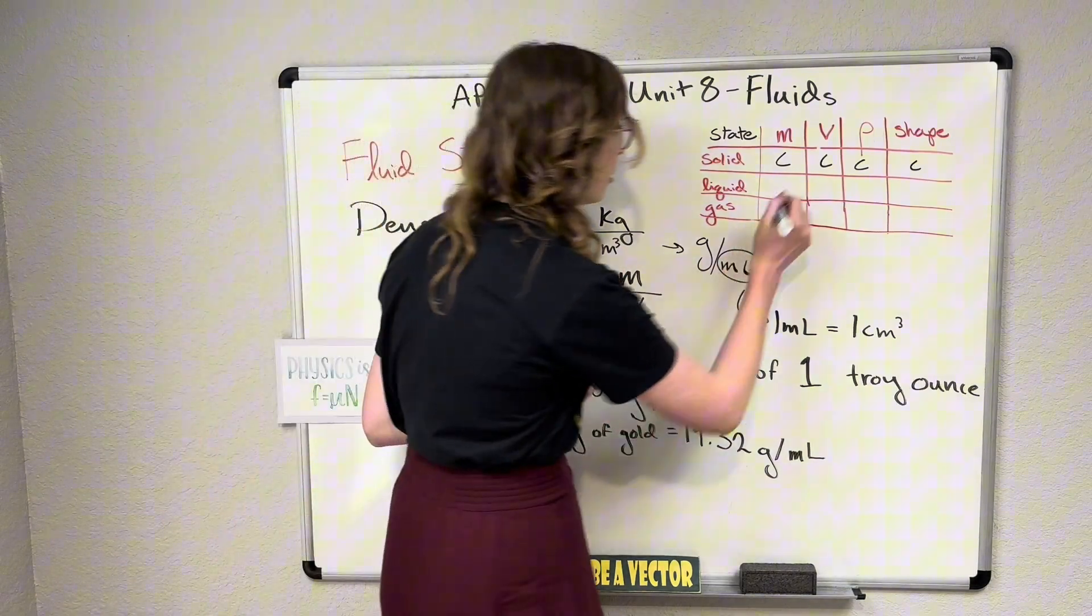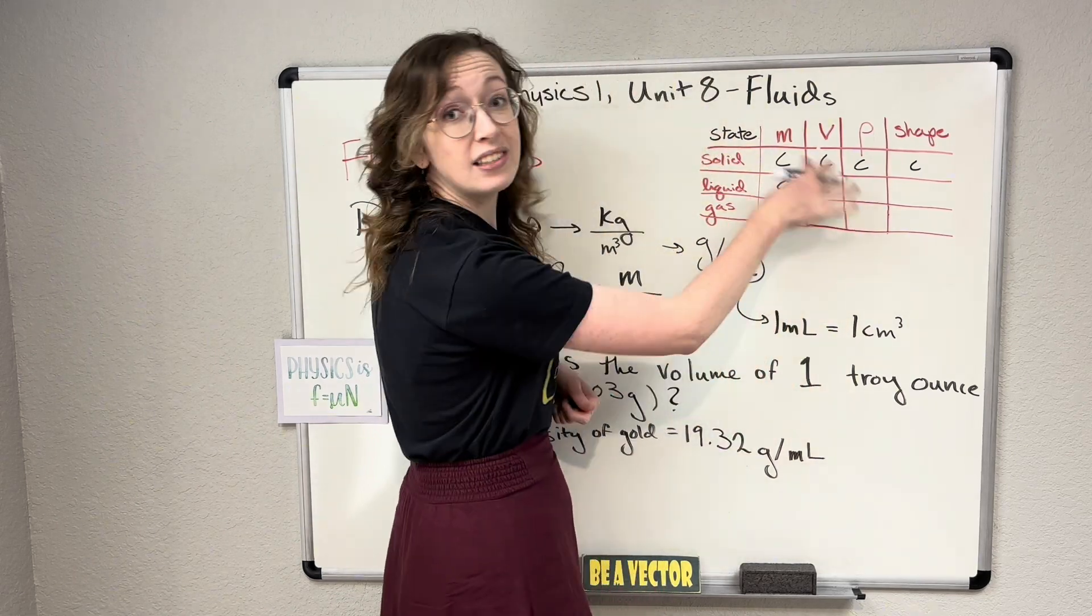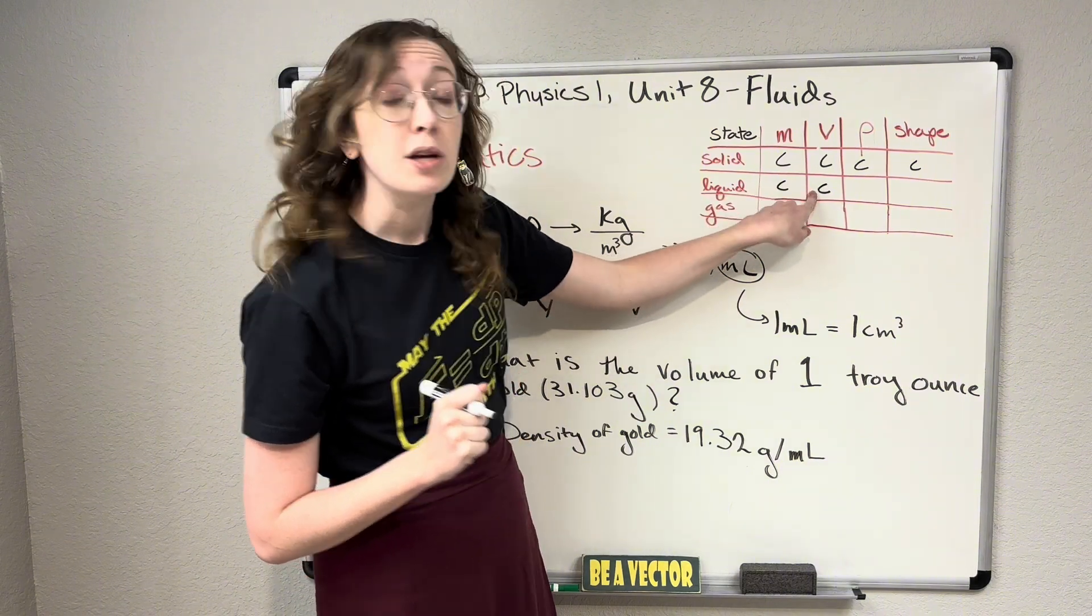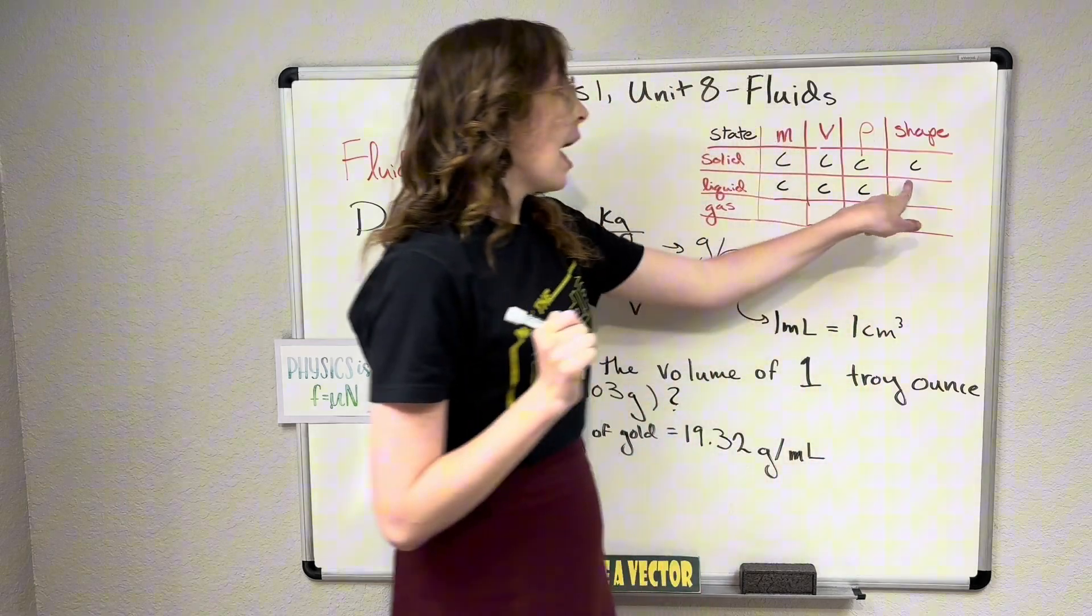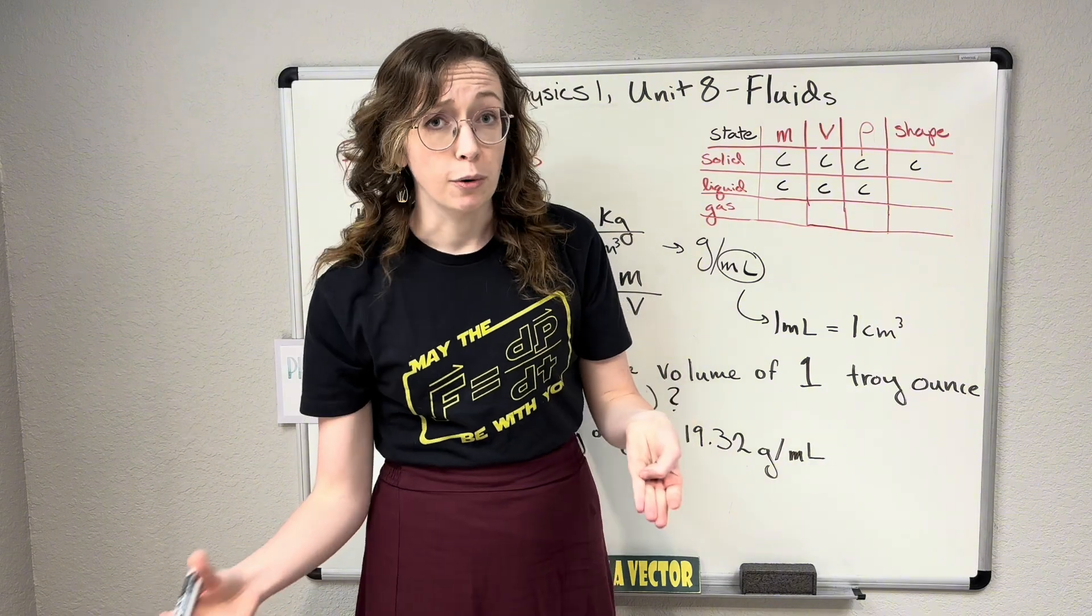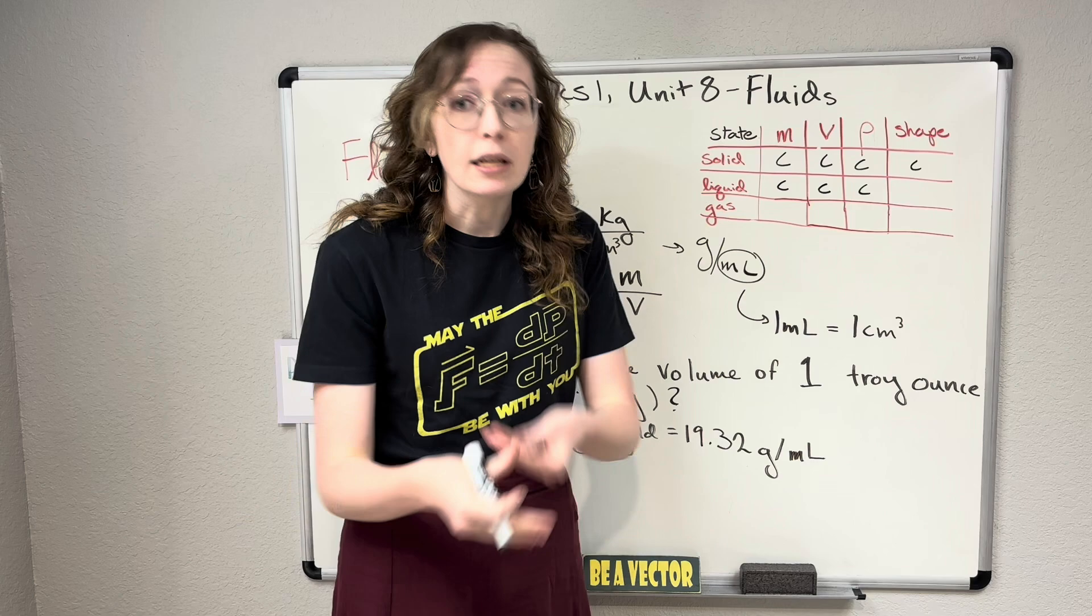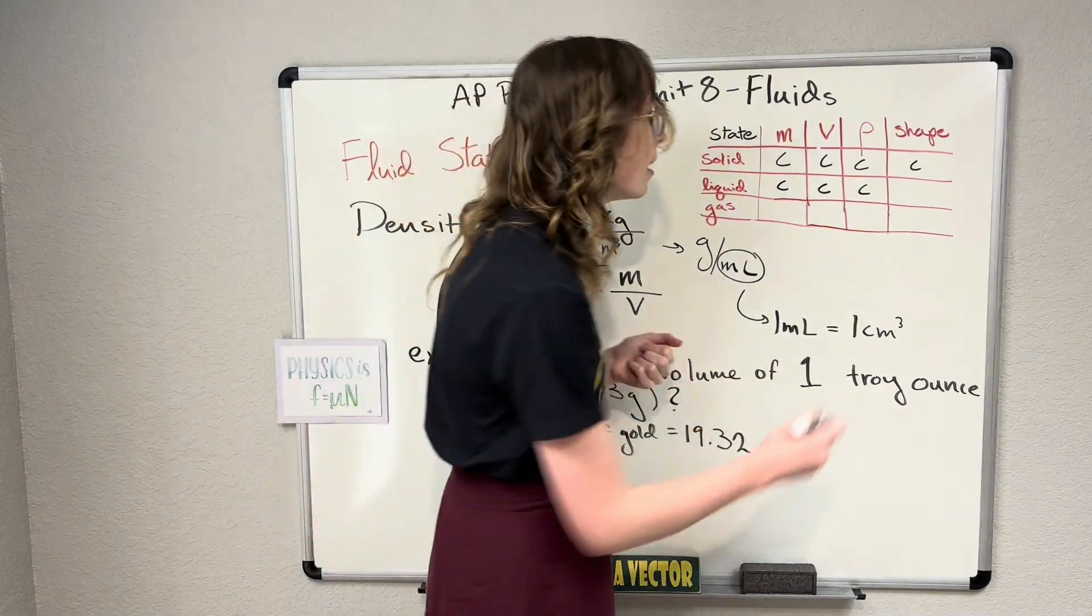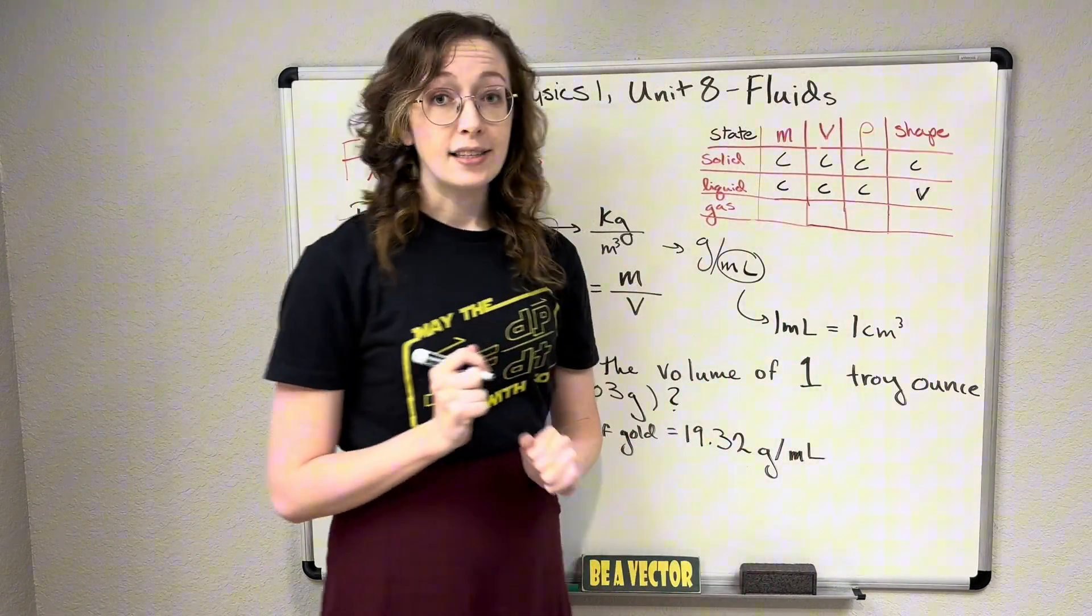Liquids are very similar. They don't change their masses and they also don't change their volume. So I'm doing a little C for constant in all of these blocks. Because their mass is constant and their volume is constant, the density of liquids are also going to usually be constant. However, liquids do change their shape. That's a property of liquids that you guys have probably heard before. If not, then you're at least familiar with it from your day-to-day experience. Liquids take the shape of their container, right? If I pour water in a cup, it takes the shape of the cup. So the shape of liquids is variable. It does not stay constant.